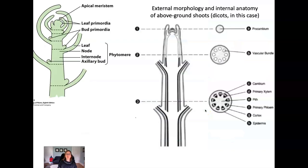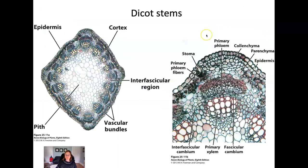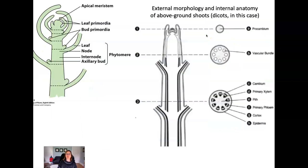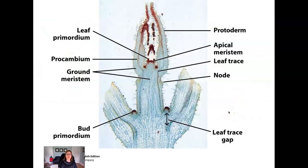If you cut through the newest part of the stem right near the apical meristem, you'll find much less differentiated tissue. Some areas are starting to differentiate into epidermal tissue, but there's not very much differentiation at all in the youngest part of the stem. Vascular bundles develop eventually and then become more differentiated as the plant matures.